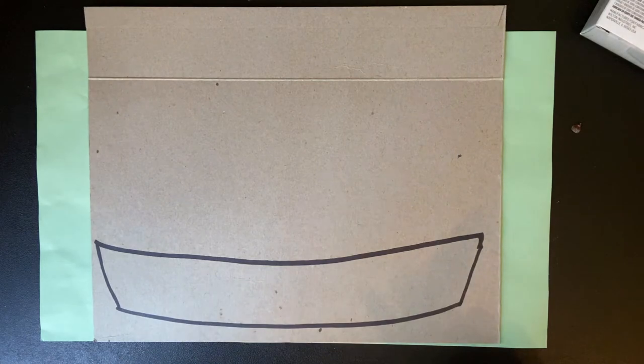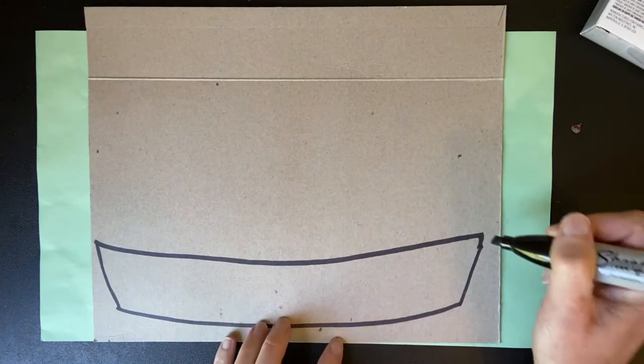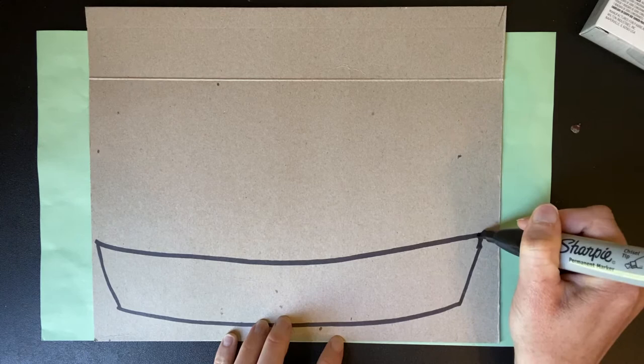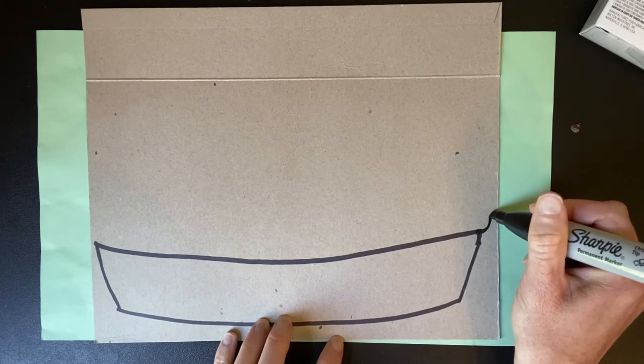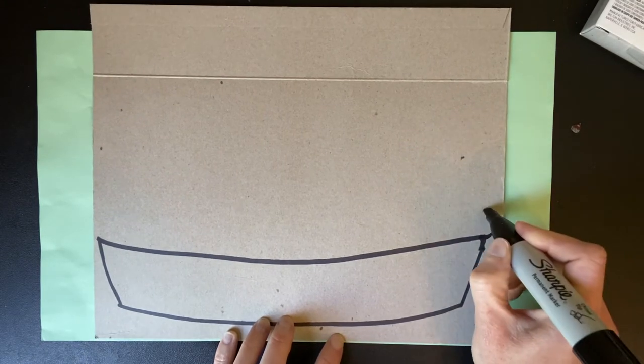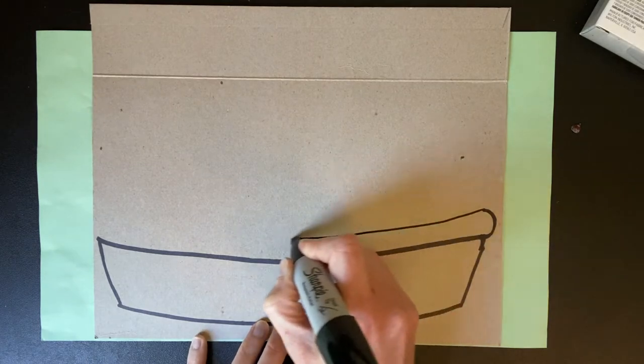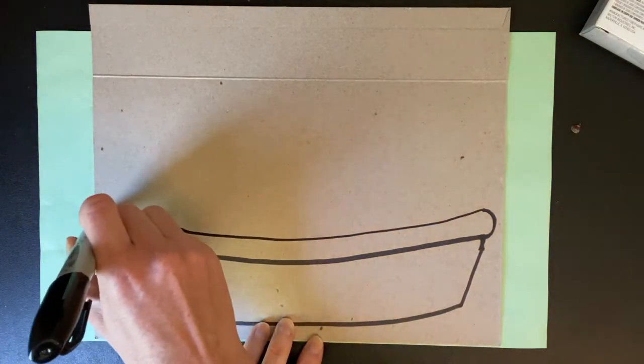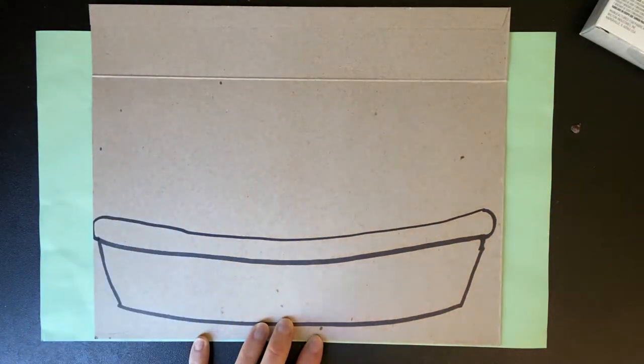The next thing I'm going to do is I'm going to draw the crest of the pie. And to draw the crest of the pie, all I'm going to do is kind of curve up and then I'm going to make that same curve again.